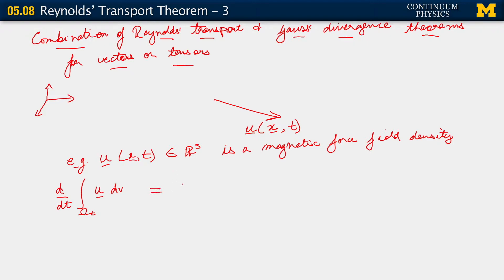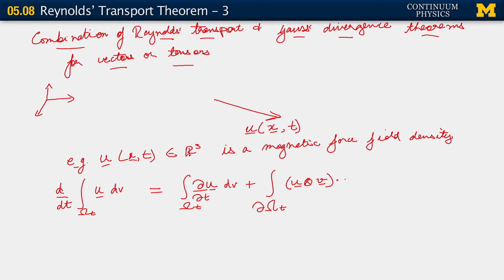Essentially what the Reynolds Transport Theorem and the Gauss Divergence Theorem applied together tell us is that this equals the integral over omega t of the partial time derivative of u — just look at your region in space, freeze it with respect to time t, and look at how u fluctuates with respect to time over that field — plus an integral over the boundary of your configuration at that instant, involving the quantity u tensor v, dotted with the unit outward normal da.